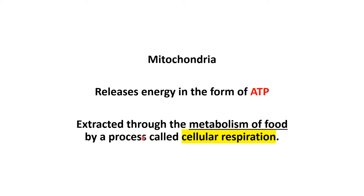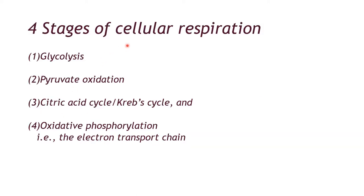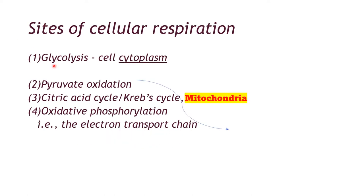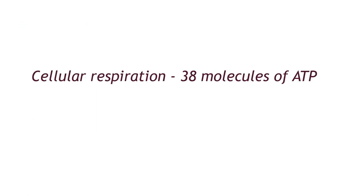Mitochondria releases energy in the form of ATP, and this ATP is extracted through the metabolism of food by a process called cellular respiration. Cellular respiration occurs in four stages: glycolysis, pyruvate oxidation, the citric acid cycle (also known as the Krebs cycle), and oxidative phosphorylation, which is the electron transport chain. Among these, only glycolysis occurs in the cytoplasm of the cell.